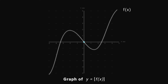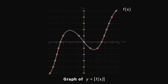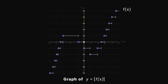First, draw the function and mark all the integers on the y-axis. Then draw horizontal lines from these points, and from these points draw vertical dotted lines facing downward. Finally, draw these horizontal line segments.